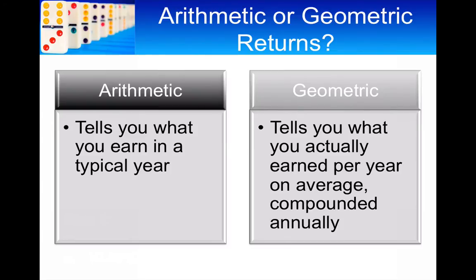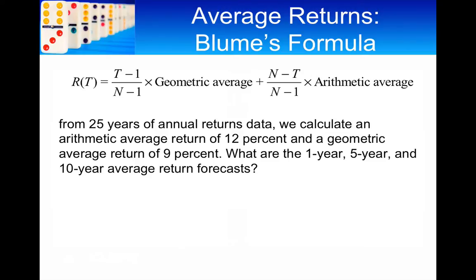And the method that people use is Blume's formula. Now, in Blume's formula, you see that what you've got is you've got weighted averages of the geometric average and the arithmetic average. So, you can see here that the return, the average return, is a function of the geometric average and the arithmetic average.